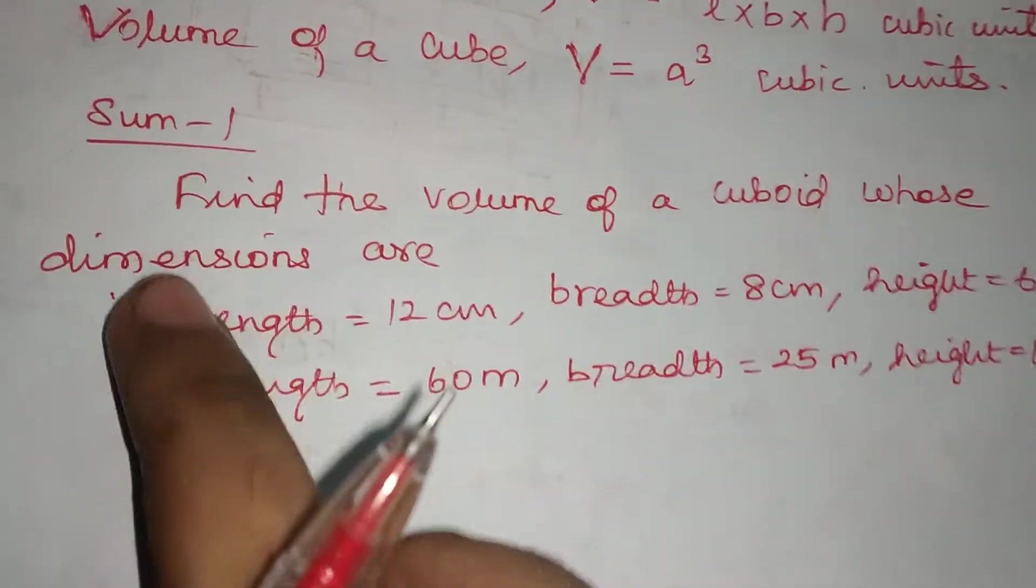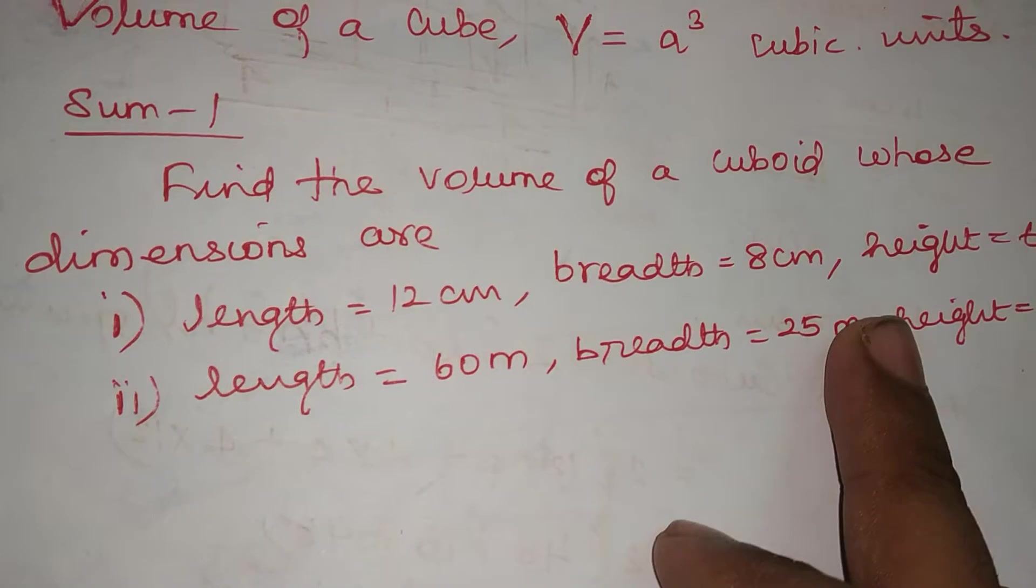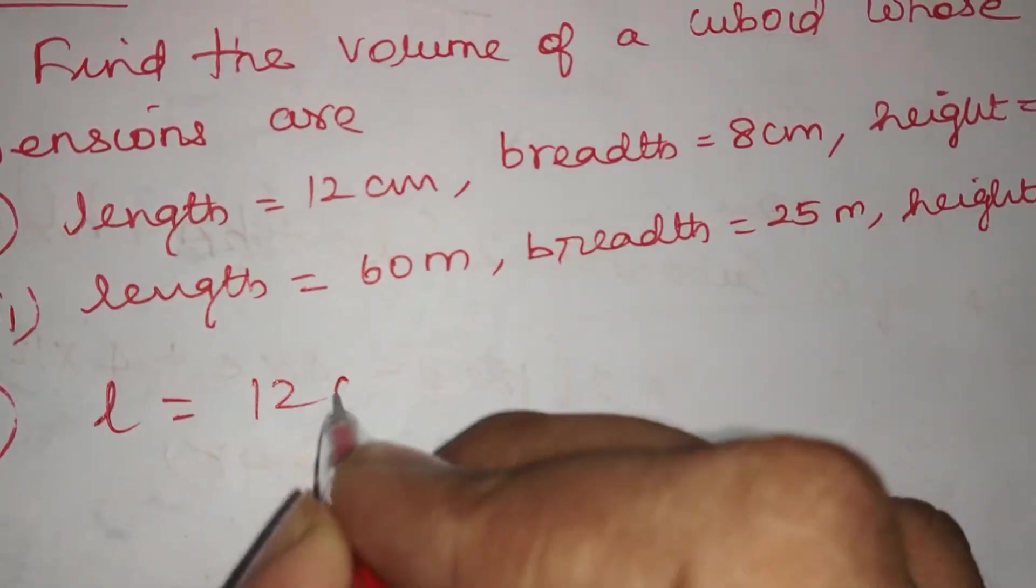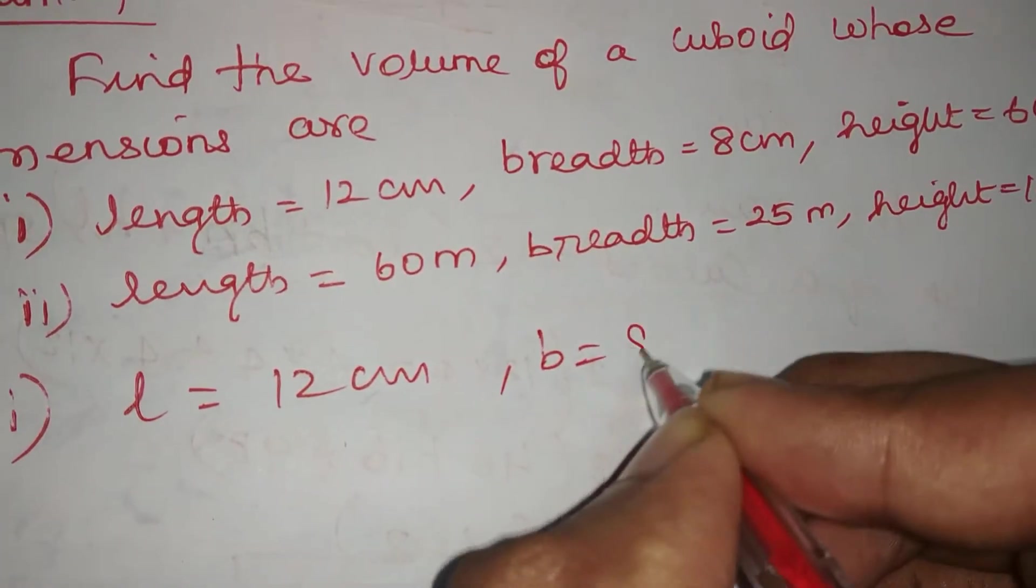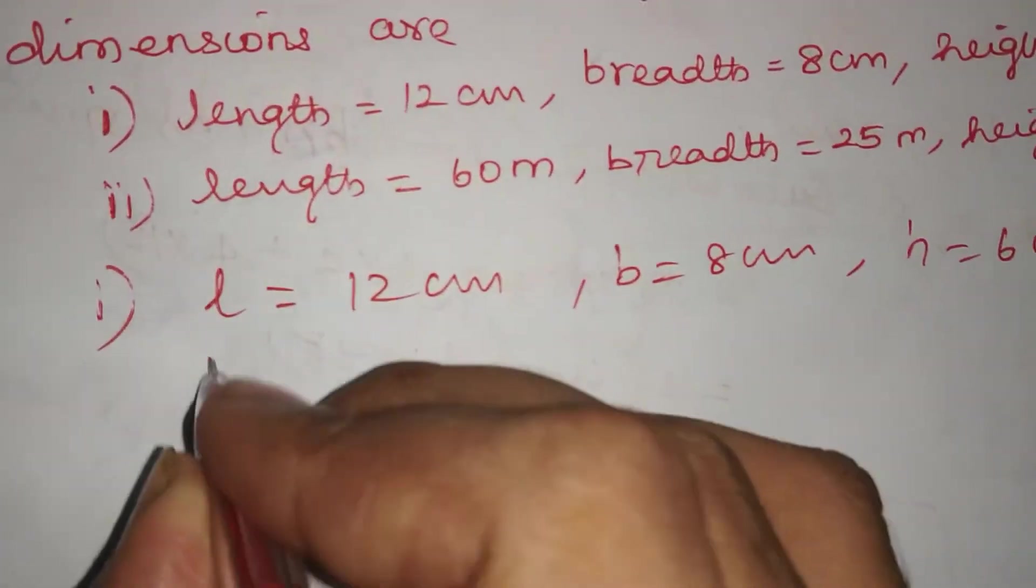Find the volume of a cuboid whose dimensions are: L equals 12 cm, B equals 8 cm, Height equals 6 cm. So L equals 12 cm, B equals 8 cm, H equals 6 cm. Volume of a cuboid formula.